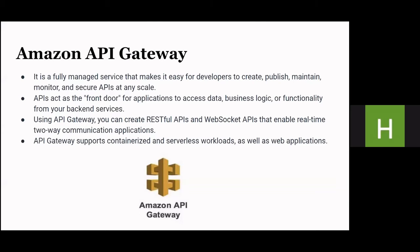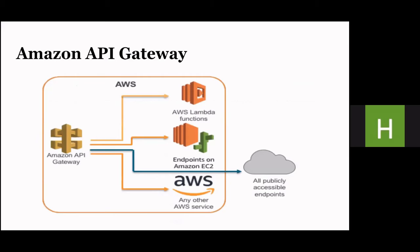The next is Amazon API Gateway. It connects to different backend services so developers can create, publish, maintain, and monitor different applications. The applications can access data, use business logic, and functionality from backend services. Here is a diagram showing how Amazon API Gateway connects to different background services and provides the data.